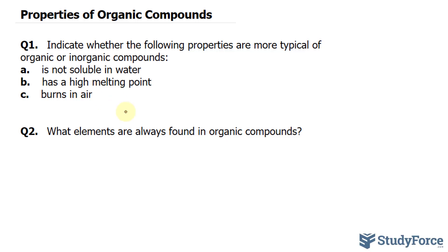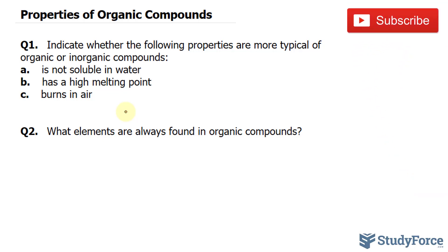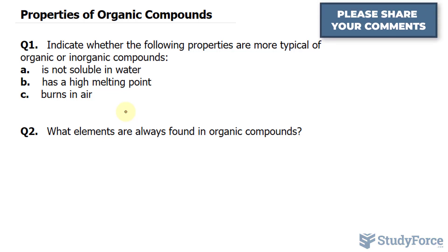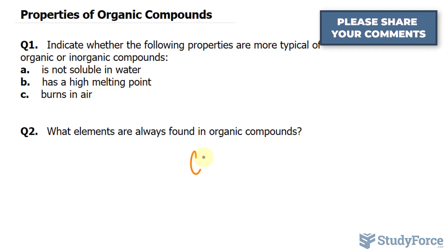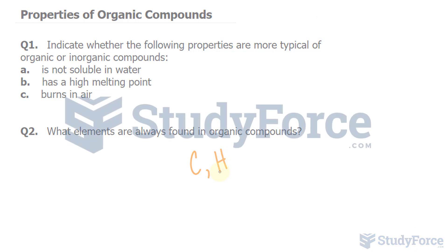In question two: what elements are always found in organic compounds? I mentioned at the beginning it's carbon and hydrogen, but also other elements can be found in organic compounds. But as long as those two are there, then that's an organic compound. So here we have carbon and hydrogen. And there you have it — a quick intro to organic compounds.